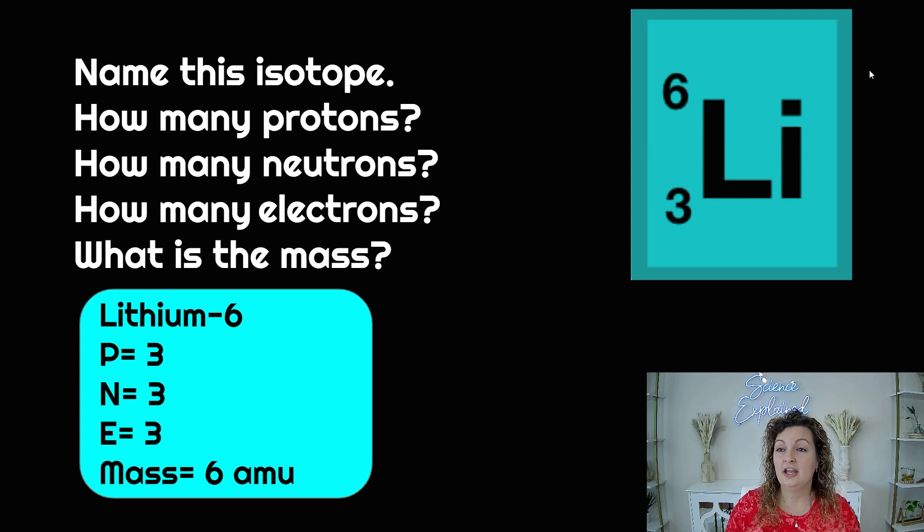And then electrons in a neutral atom are going to be equal to protons. This does not say that it's charged. It would have a negative or positive with a number if it was a charged ion. Therefore, we can assume this is neutral. So three protons, three electrons would be the answer. And then the mass is going to be six amu, standing for atomic mass unit.